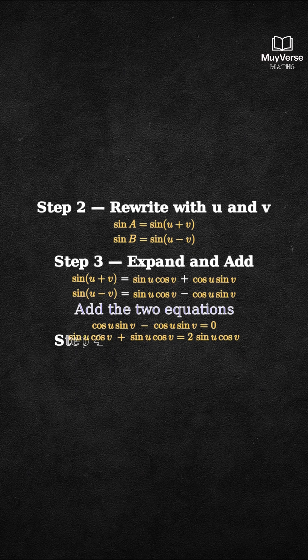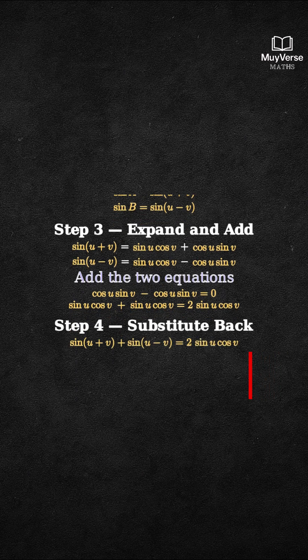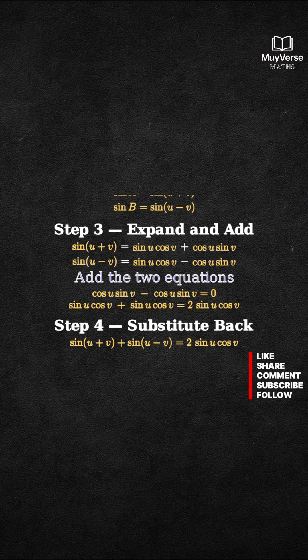Step 4. Combine the results. Therefore, sine of U plus V plus sine of U minus V equals 2 times sine U cosine V.